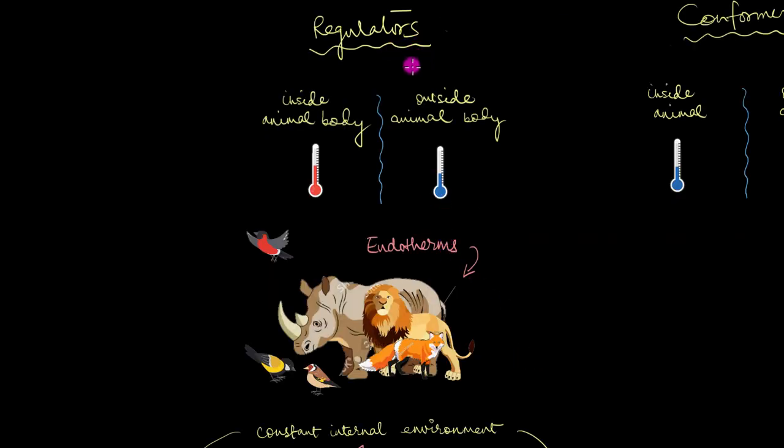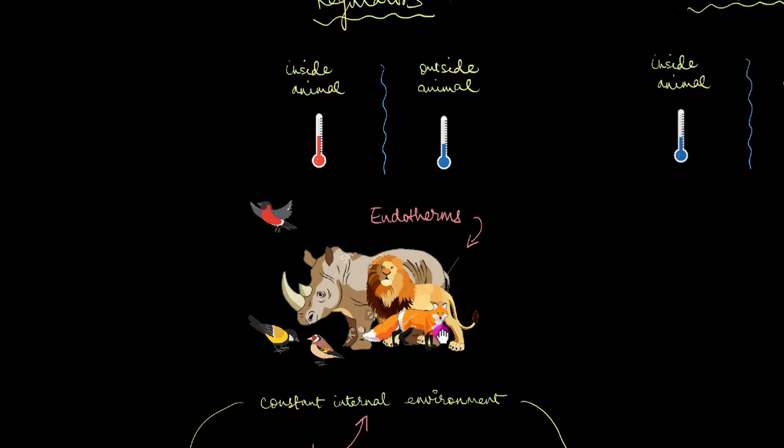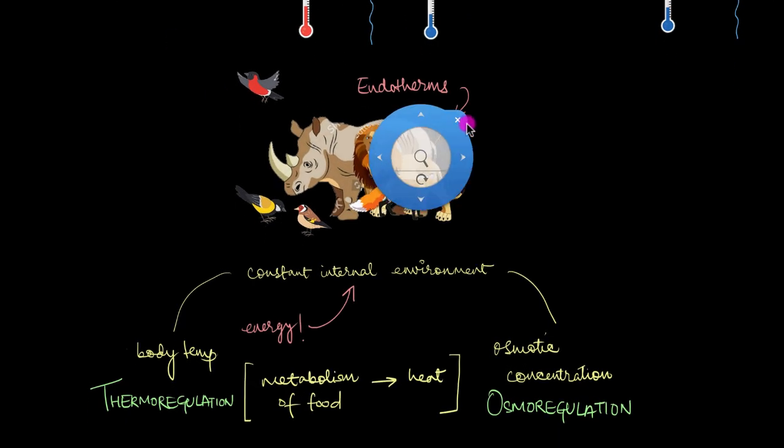Let's start with us regulators. All mammals and birds are exclusive regulators. That means all of them can maintain a constant internal environment, like a constant body temperature, constant pH, constant osmotic concentration, which by the way is the concentration of water and salts inside the body. And all of this is maintained at the expense of energy.